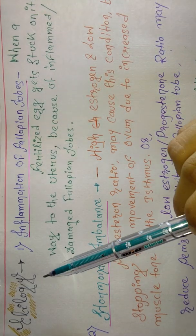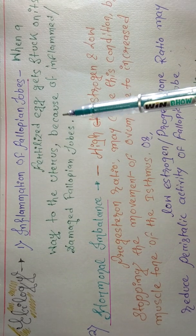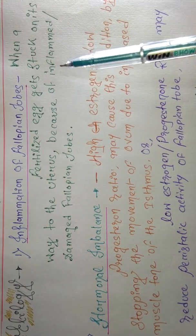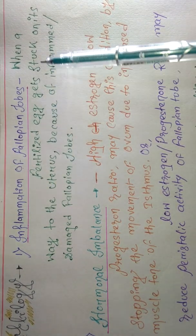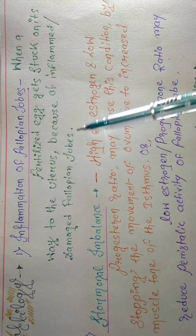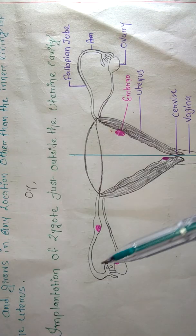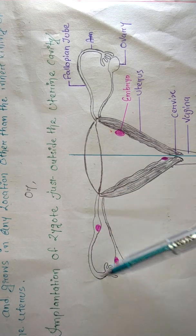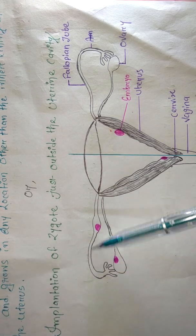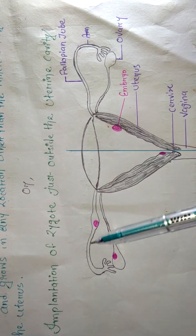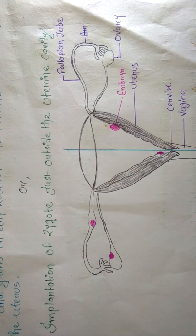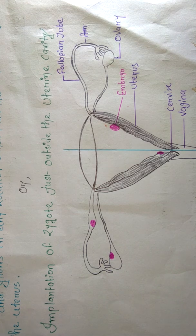Now the etiology of ectopic pregnancy — why this condition occurs. The first cause is inflammation of the fallopian tube. When a fertilized egg gets stuck on its way to the uterus because of inflammation or damaged fallopian tubes, this can lead to ectopic pregnancy. If the fallopian tube is infected or damaged, the embryo won't be able to migrate and will get stuck at some position in the tube, leading to ectopic pregnancy.